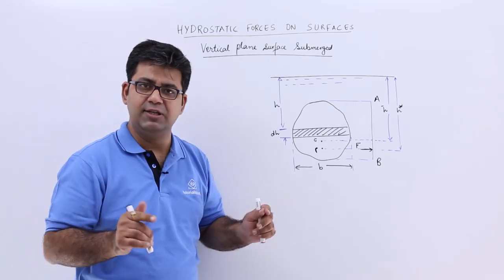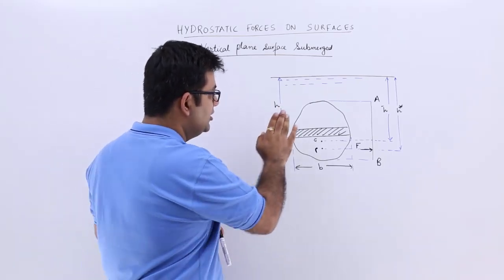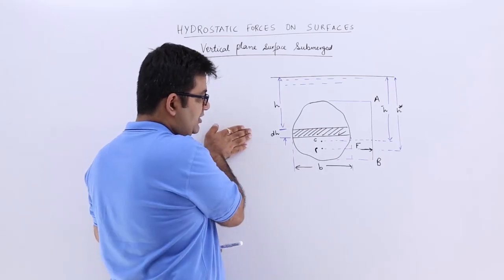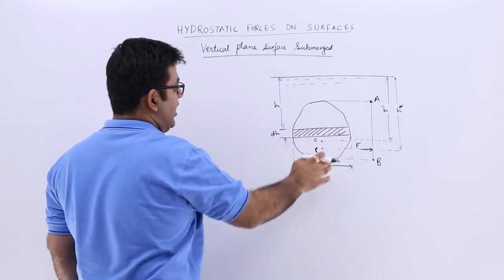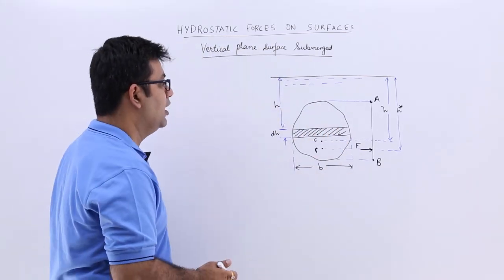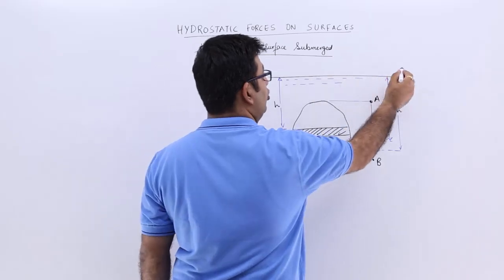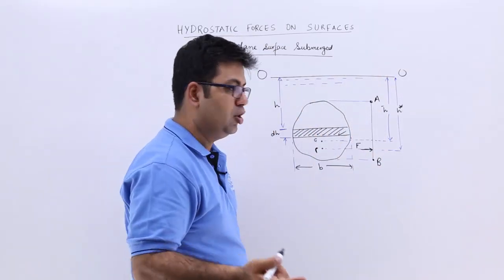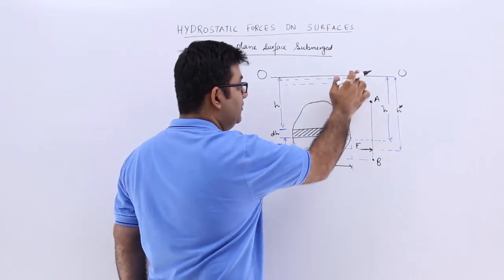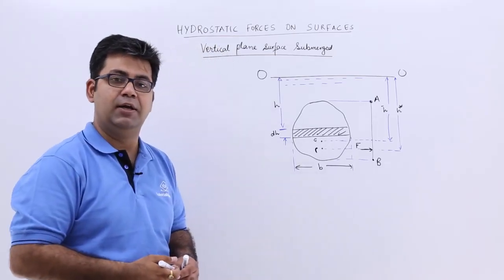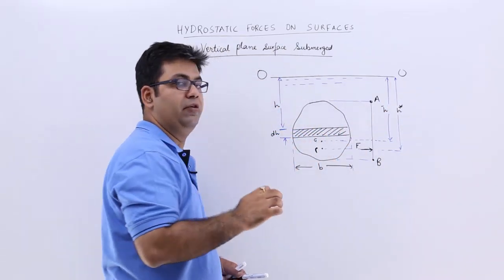We will do 4 cases in this. The very first case is a vertical plane surface which is submerged. If you look at it from the side, you will see a straight line AB — this is any random surface. The centroid of this surface is G, and this is the free surface OO. The distance of the centroid from the free surface is H-bar, which always denotes the distance between the free surface and the centroid of the surface.